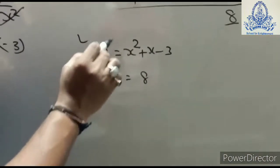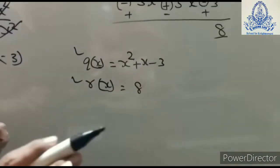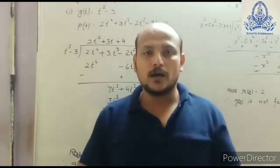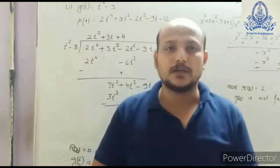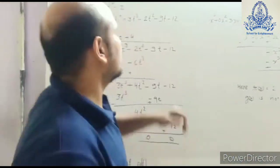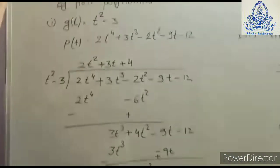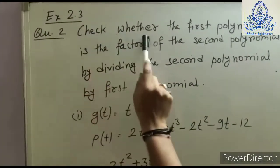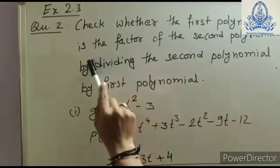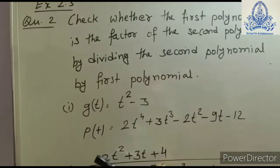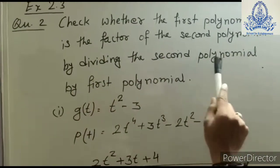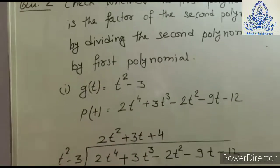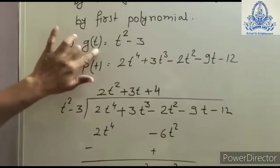So we have learned how to solve polynomial division by the long division method. Now let's take question number two of Exercise 2.3. It says: check whether the first polynomial is a factor of the second polynomial by dividing the second polynomial by the first polynomial.